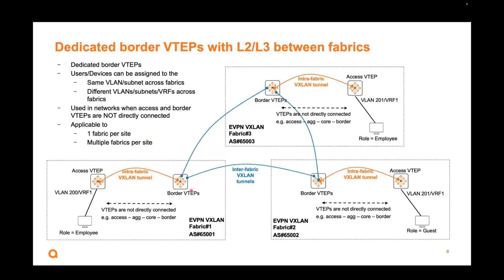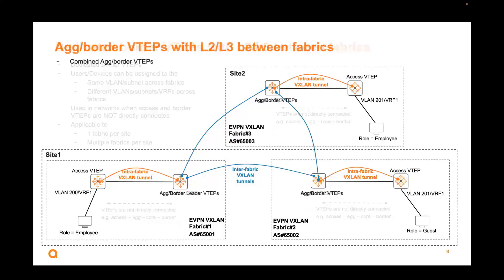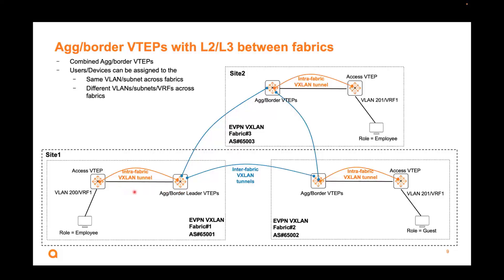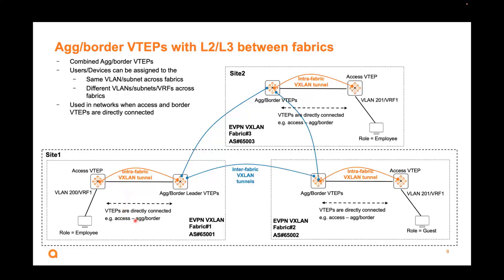You can do one fabric per site — this could be three sites or one physical campus with three fabrics. Another use case is a combined access and border VTAP in the campus, where your access and the access switch are directly connected and the X switch is used as a border. Because they're directly connected with no other device in the middle, you can use this for both layer 2 and layer 3 connectivity across fabrics. You can also do one fabric per site, or one site with two fabrics.